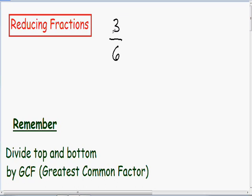So if you look at this example, 3 over 6, we have a 3 in the numerator, and we have a 6 in the denominator. What is the biggest number that we can divide by these two numbers that we don't get a decimal?